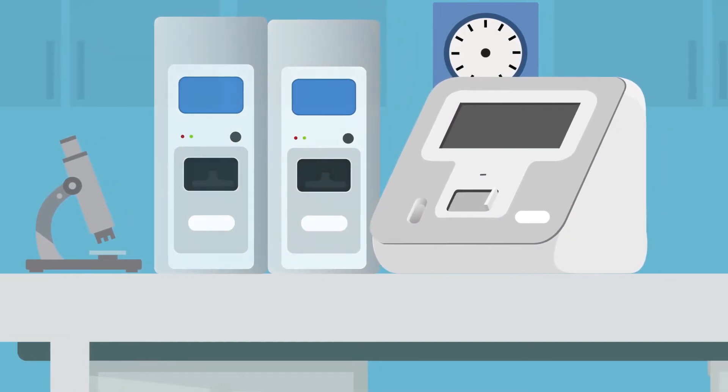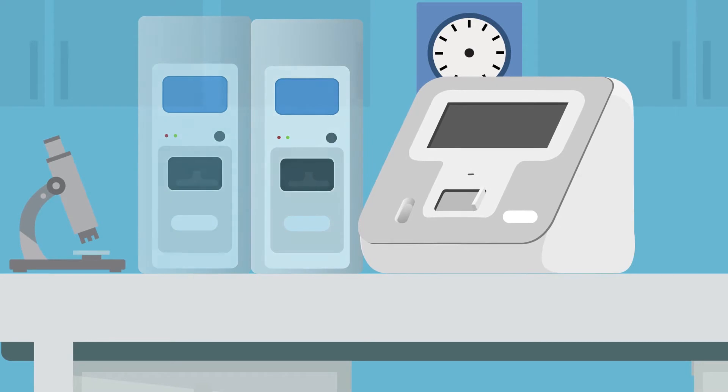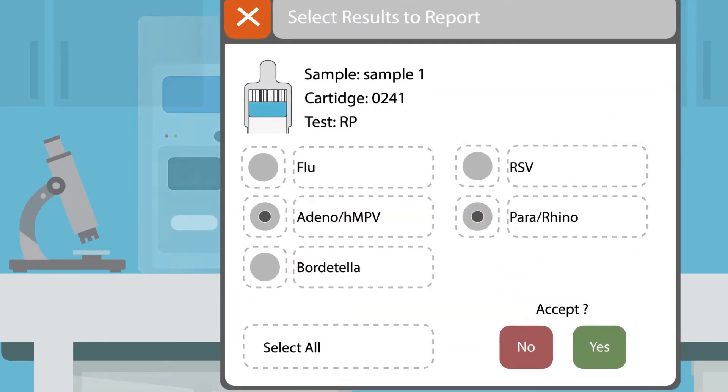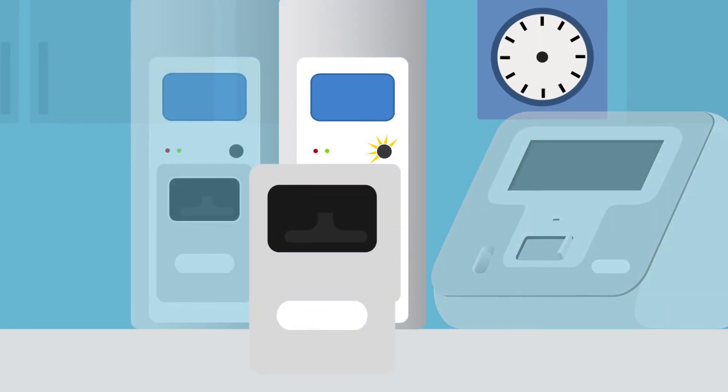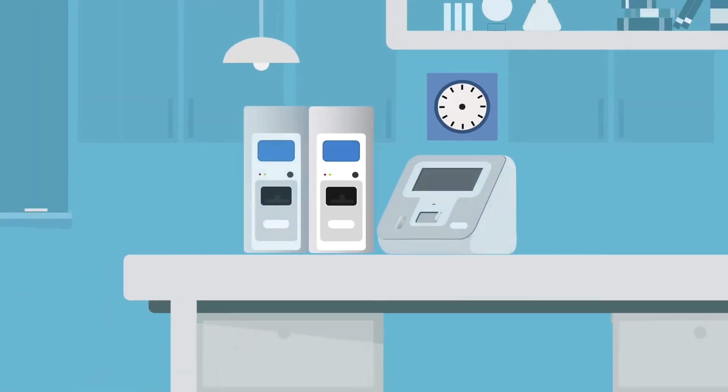The Verigene Reader serves as the user interface and central control unit for the Verigene system, storing and tracking information throughout test processing. The Verigene Processor SP performs all the automated test processing steps, including specimen extraction, target amplification, and hybridization.